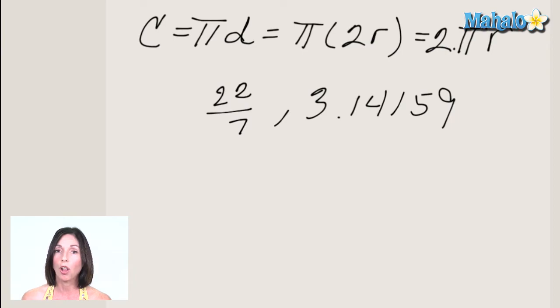Now the area of a circle also uses pi in its formula, and that is pi times the square of the radius. But again, if you know the diameter, you can find the radius and then find the area.